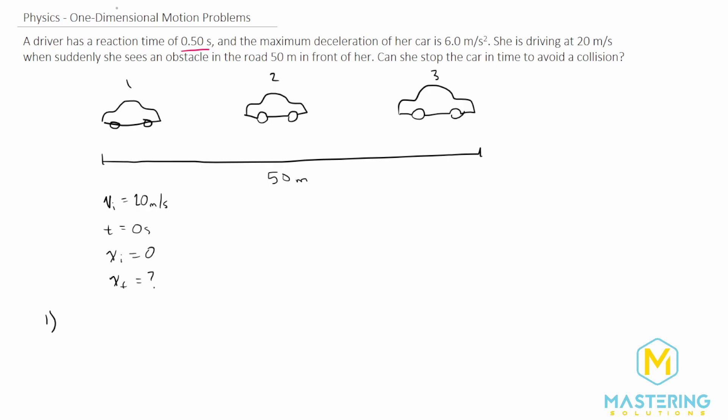So for part one, to do that, we're going to use a kinematic equation. And we'll be using the one which is x final is equal to x initial plus the velocity times the change in time, plus one half the acceleration times the time squared.